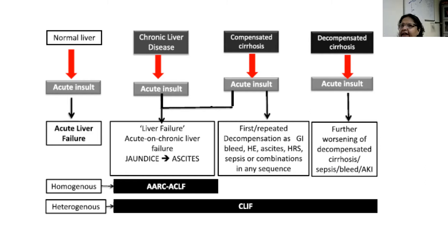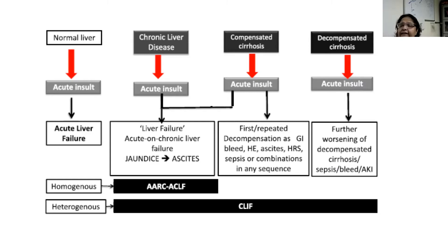The CLIF-SOFA definition covers whether it's an acute insult in a chronic liver disease, in a compensated cirrhosis, or in a decompensated cirrhosis — all these are covered under CLIF-SOFA, and hence it's a more heterogeneous definition. That is why the APACEL definition is more easier to understand, and we will go by the APACEL definition from here onwards.